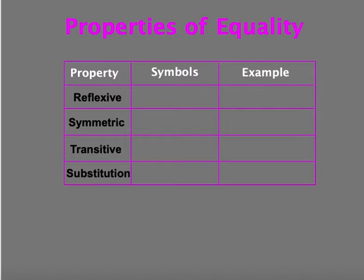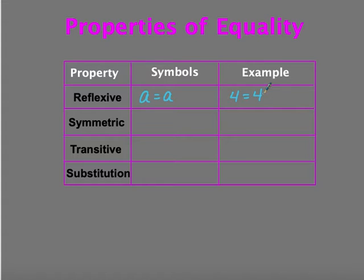Let's talk about some properties you've learned in elementary school and reinforced in geometry — these properties help us get through these equations. The first is the reflexive property: a variable A is equal to variable A. If A equals 4, then 4 equals itself. This property helps us when we get to the transitive and substitution properties. The reflexive property lets you replace values with things that are already equal to themselves.